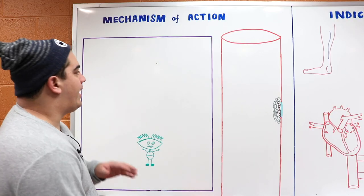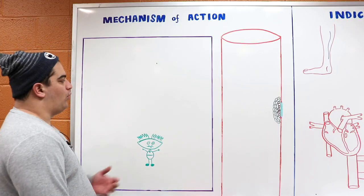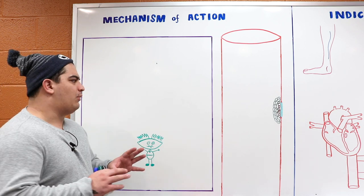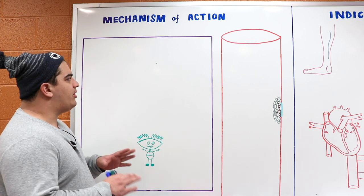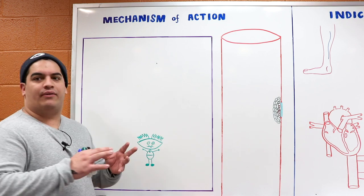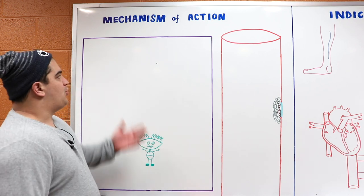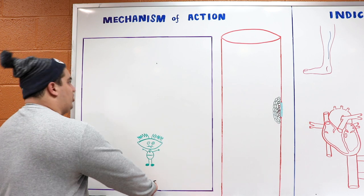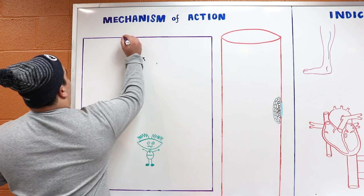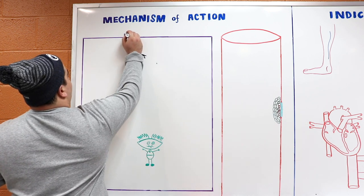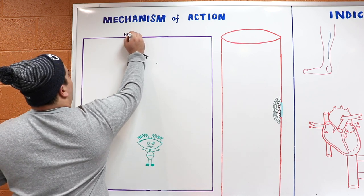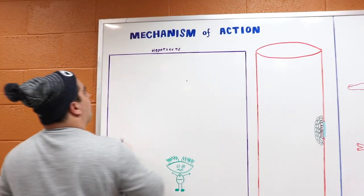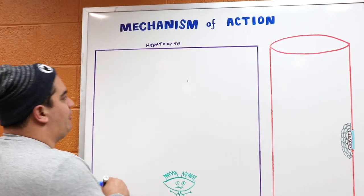Let's get started on the mechanism of action of Warfarin. It's a really cool action. If you guys remember the liver has hepatocytes, so we're going to zoom in into a hepatocyte — that's a liver cell. When you take Warfarin, it's actually taken per oral, so PO.